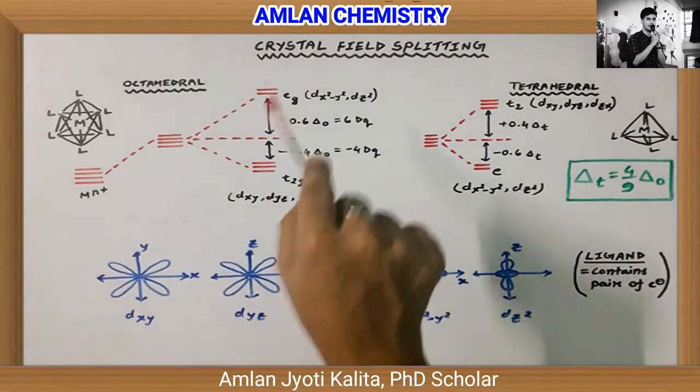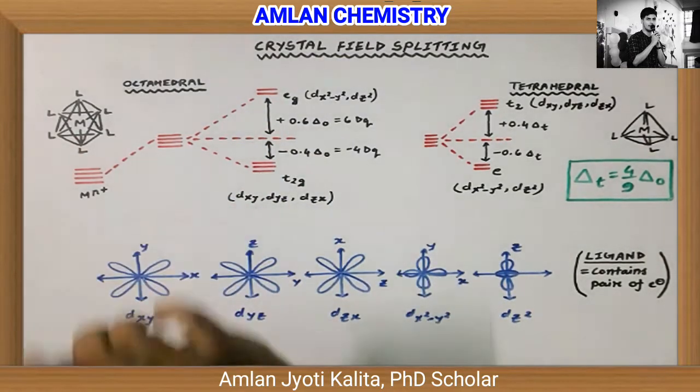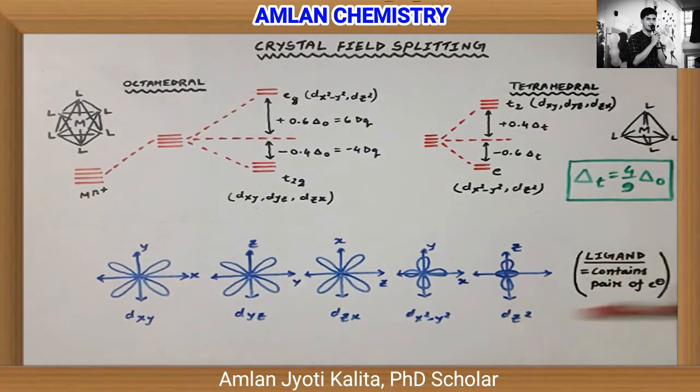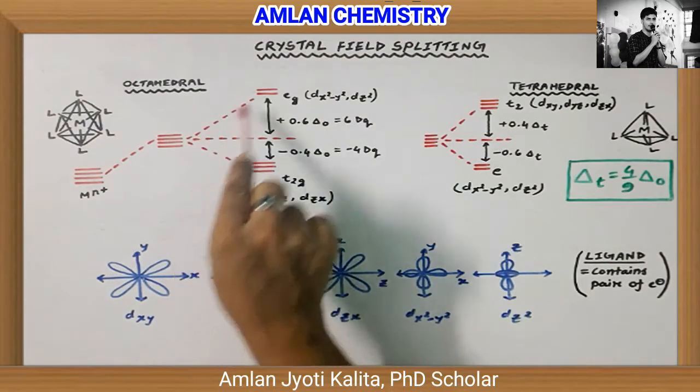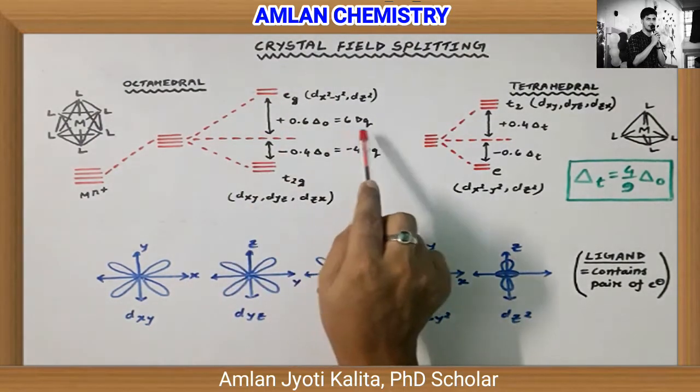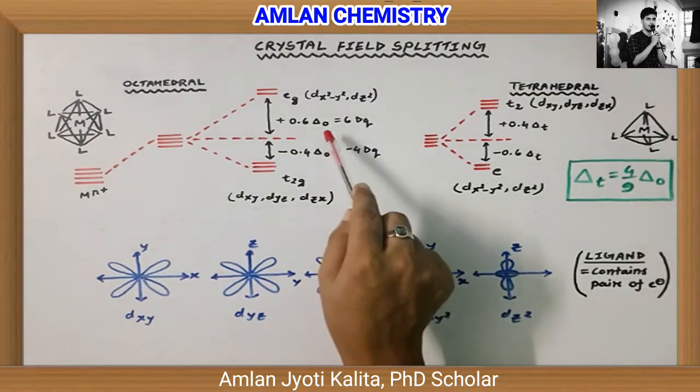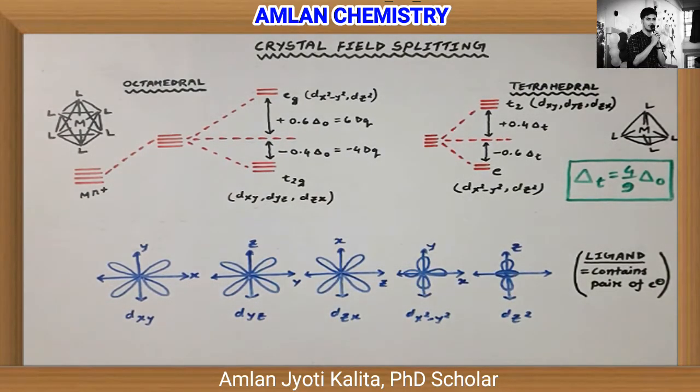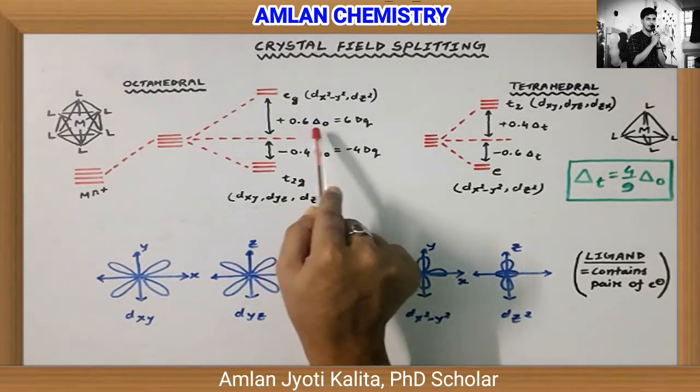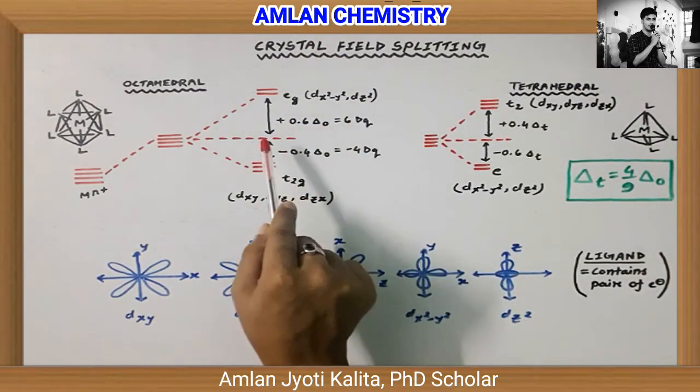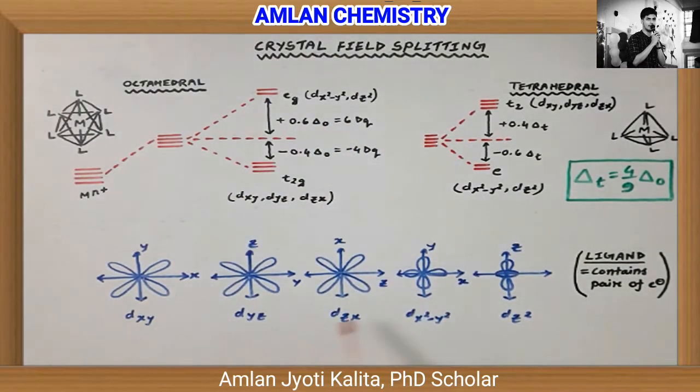For octahedral complexes, when ligands approach along the axes, two d-orbitals—dx²-y² and dz²—are along the axis. These two orbitals have higher energy. How much higher? 6dq or 0.6ΔO. Here, dq means differential of quanta, O means octahedral, and delta means crystal field splitting energy.